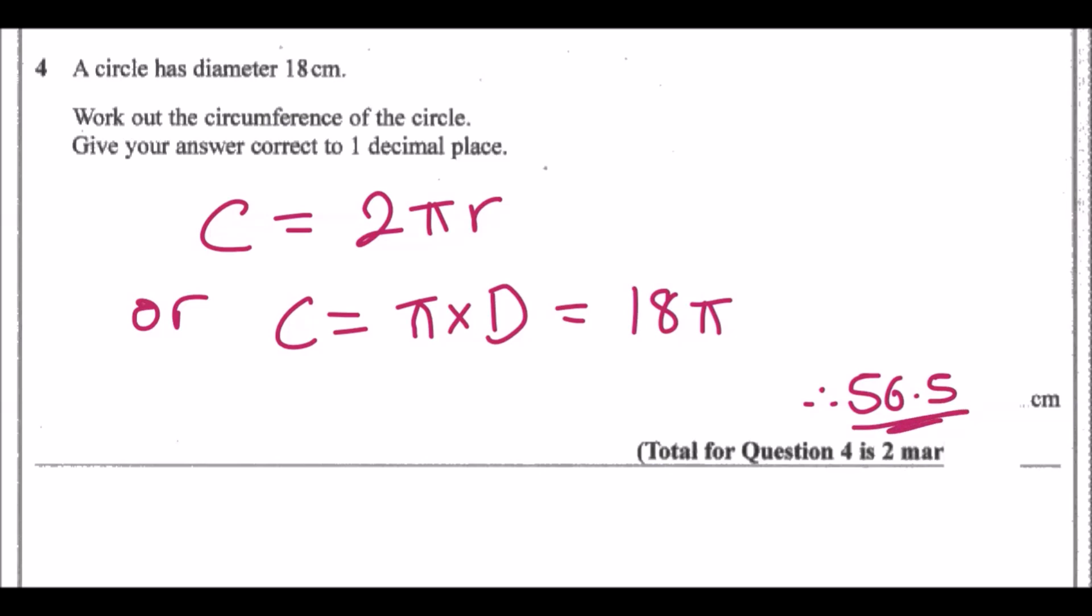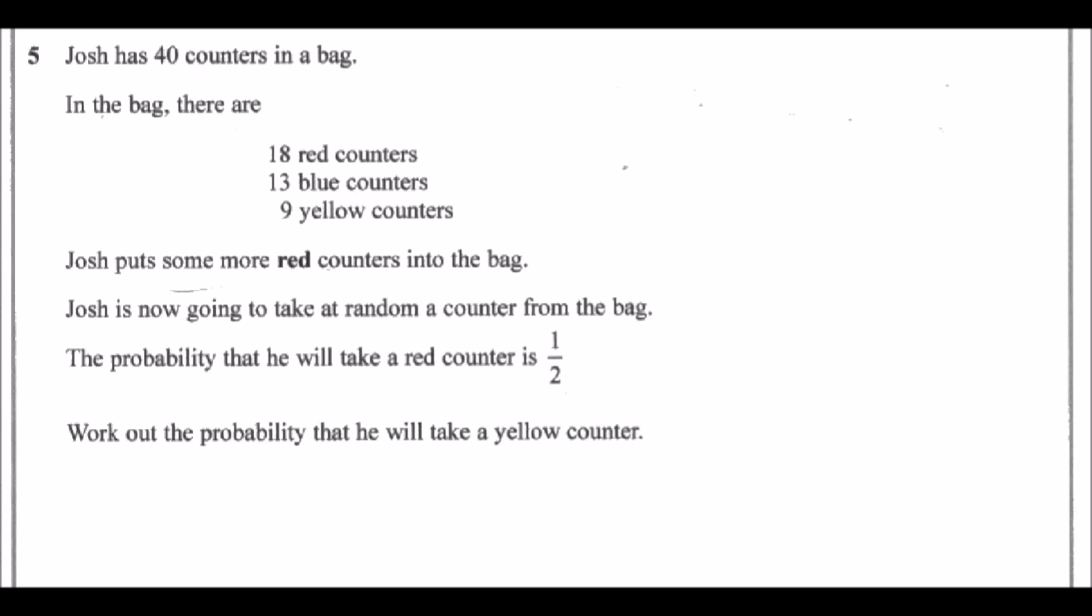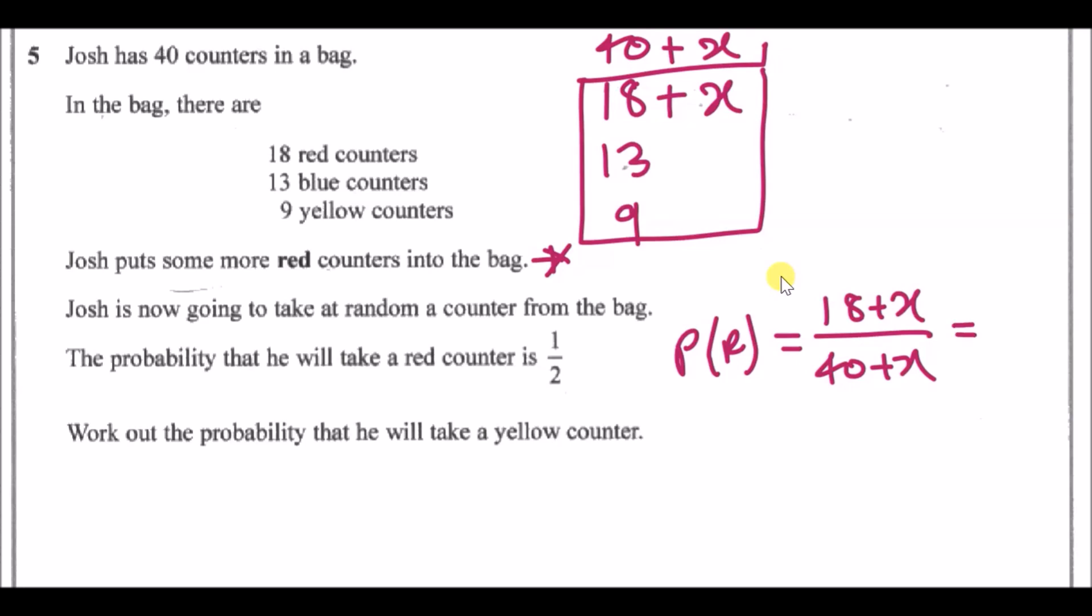Number five: Josh has 40 counters in a bag. In the bag there are 18 red, 13 blue, and 9 yellow. Josh puts some more red counters in the bag. Now he has 18 red plus an additional x counters. This means in the bag he had 40 originally, now he's got an additional x amount. The blue is still 13 and yellows are still 9. Josh is now going to take at random a counter from the bag. The probability that he will take a red counter is a half. This means 18 plus x over 40 plus x equals one-half.